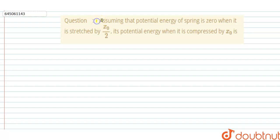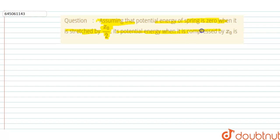Hello, welcome to DoubtNet. In this question given: assuming that the potential energy of a spring is zero when it is stretched by x₀/2, find its potential energy when it is compressed by x₀.